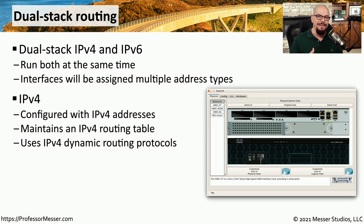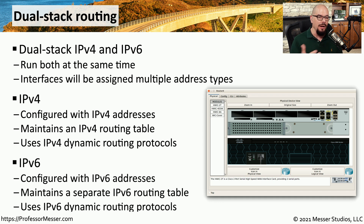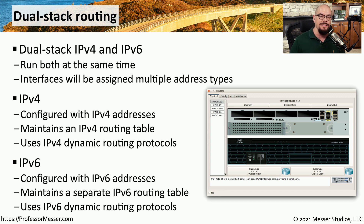What we've done is add an additional protocol to our routers for IPv6. There's a separate configuration for IPv6 addresses, and these devices have their own IPv6 routing tables separate from the IPv4 routing tables. If you're using IPv6 dynamic routing protocols, those protocols would be used by the IPv6 section of this router. This allows us to configure devices with an IPv4 address, an IPv6 address, or both simultaneously, and all routing devices will be able to route that traffic appropriately.